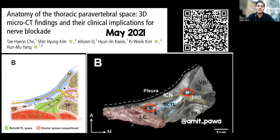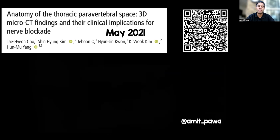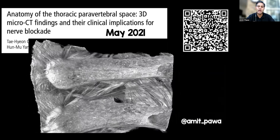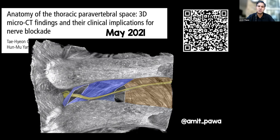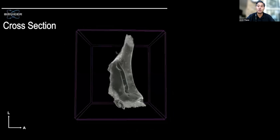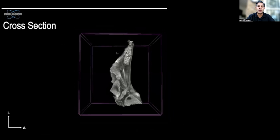It elucidated the true anatomy of the paravertebral space. When you look at the superior costo-transverse ligaments, there are slits — a medial slit and a lateral slit around it — and they provide a tangible route for how local anaesthetic injected in the retro-superior costo-transverse ligament space may actually still get into the paravertebral space. That helps us explain perhaps why the erector spinae plane block might work, and certainly why the inter-transverse process block might work.